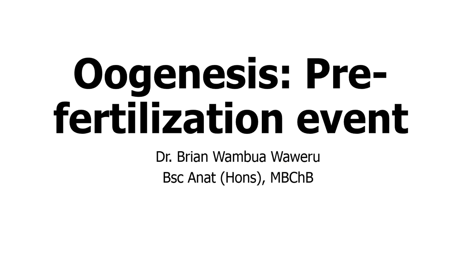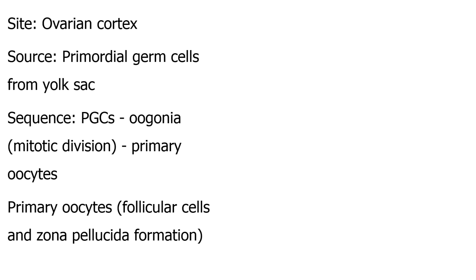It's one of the pre-fertilization events in this series. The site where oogenesis occurs is within the ovary, specifically within the ovarian cortex. The source is the primordial germ cells which come from the yolk sac and migrate to the indifferent gonads, which will mature and form the ovary. These primordial germ cells differentiate and form the oogonia, which undergo mitotic division to form the primary oocytes.